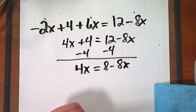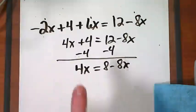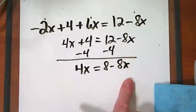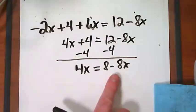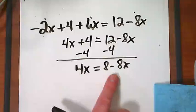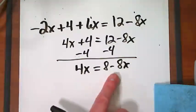4x equals 8 minus 8x. I have to do opposites again. I need to get another zero here before I'm done, because right now this x on this side and this x on this side, they've got to come together. Which one should we move? I heard an 8. We're going to move this 8x.